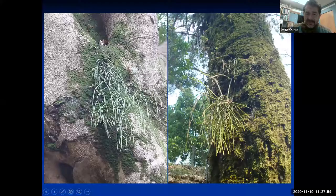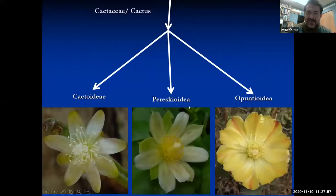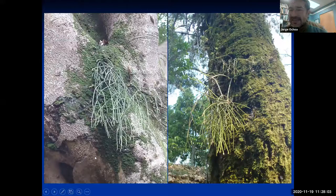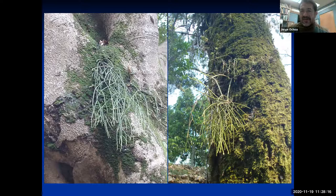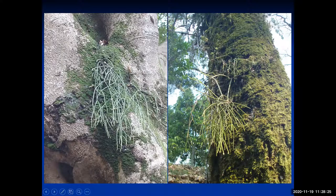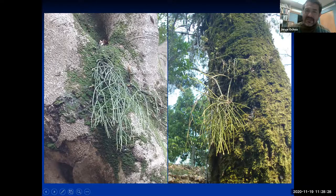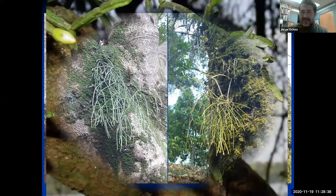The Cactoideae subfamily includes the Rhipsalis — the mistletoe cactus. Here they are growing in their habitat in South America, right out of a tree. An animal dropped the seeds, which took refuge in moss between bark, germinated, and grew. It is not a parasite — it's just growing in the moss, clinging to the bark, and catching whatever water it can.